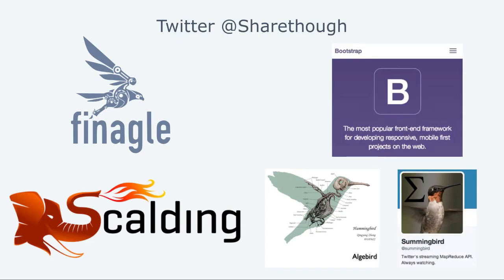We actually use a lot of Twitter projects. We probably could have given a talk about how we use Scalding as well. This is my humble suggestion for a logo for Algebird, because there isn't one — it's just a hummingbird skeleton. We also use Bootstrap for every website we make, and we were inspired by Hummingbird when we worked on our real-time MapReduce flow. But yes, today we're talking about Finagle.